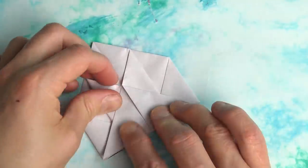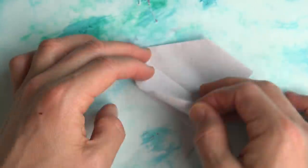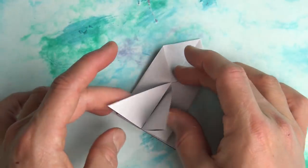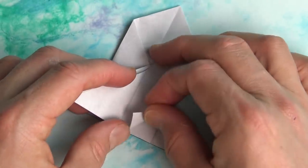And repeat. Turn over and repeat. Now bring the wings of the butterfly up and fold this flap in.